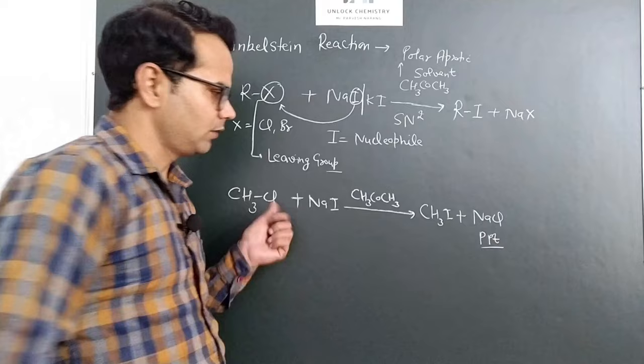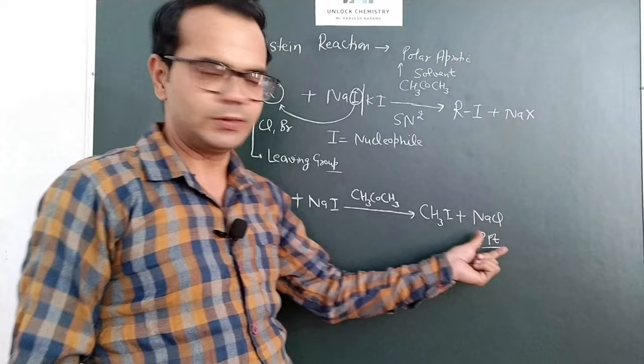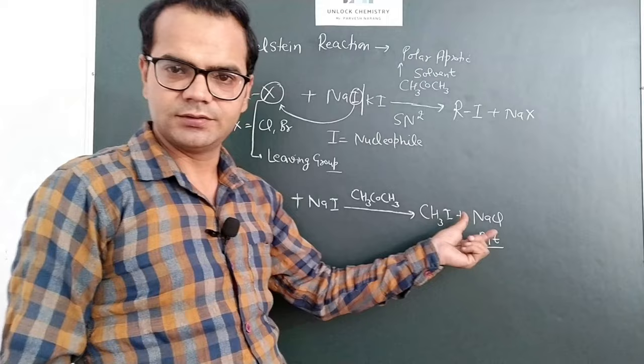Actually, initially this reaction is in equilibrium. Dynamic equilibrium is there to make the reaction shift in forward direction. This by-product must be removed, and this is insoluble in acetone. So it will form precipitate and separate out. So reaction will shift in forward direction.